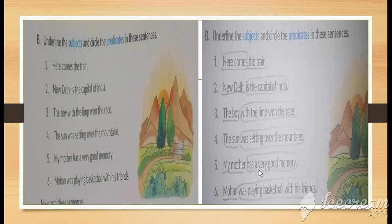Fifth example: 'My mother has a very good memory.' So what is the subject in this sentence? 'My mother' is the subject and 'has a very good memory' is telling us something about the subject, so it is the predicate.